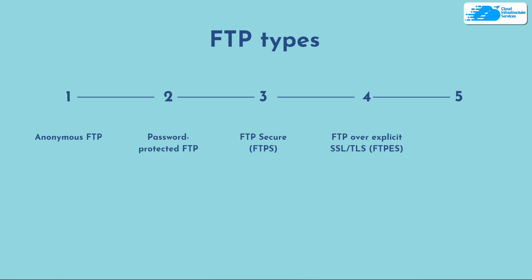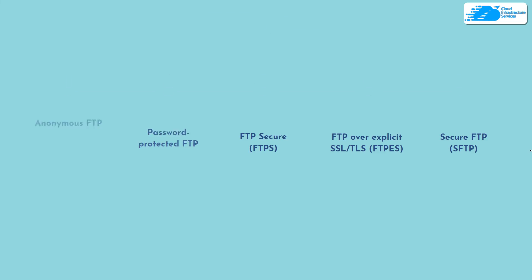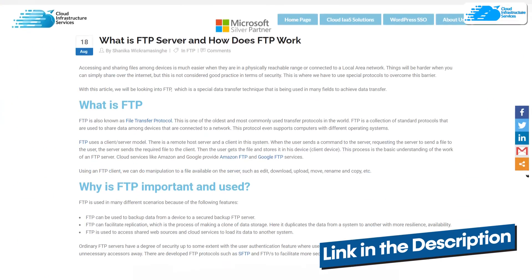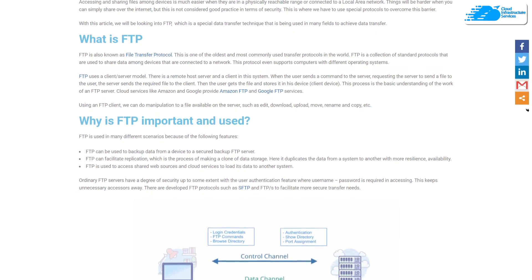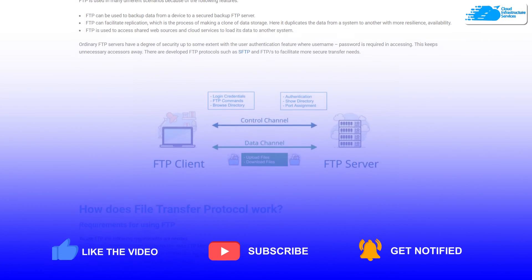Fourth, FTP over explicit SSL and TLS — similar to FTPS — enables explicit TLS support and is used in secure web and file transferring services. Fifth, SFTP — Secure FTP — is based on the SSH (Secure Shell) protocol and supports more secured file transfer. If you want to learn more, check out the link in the description for a step-by-step blog post guide on FTP. If this video helped you, please leave a like and subscribe to the channel.